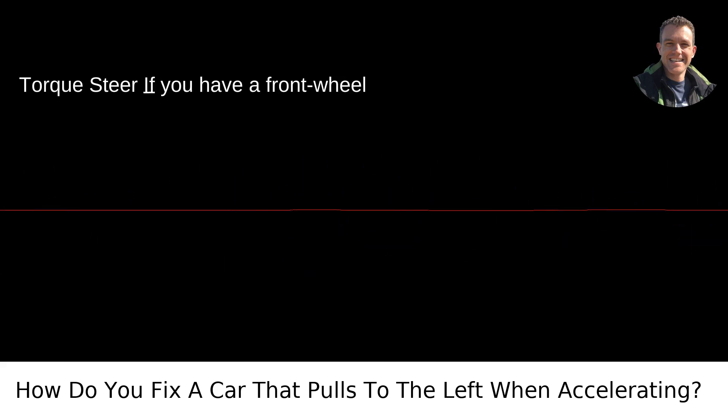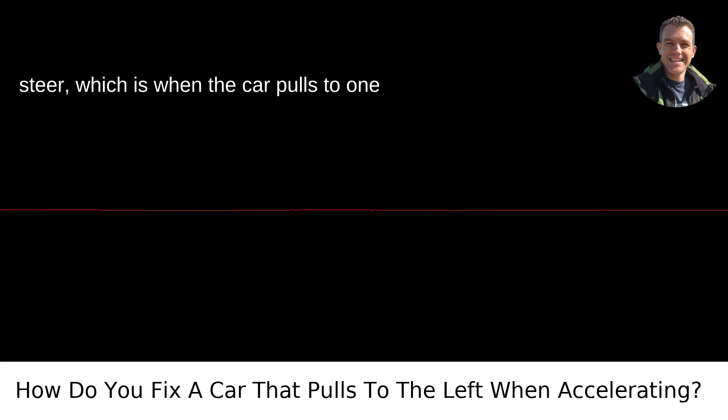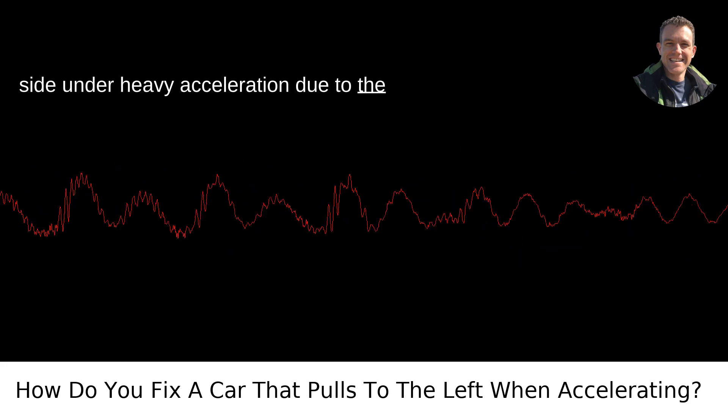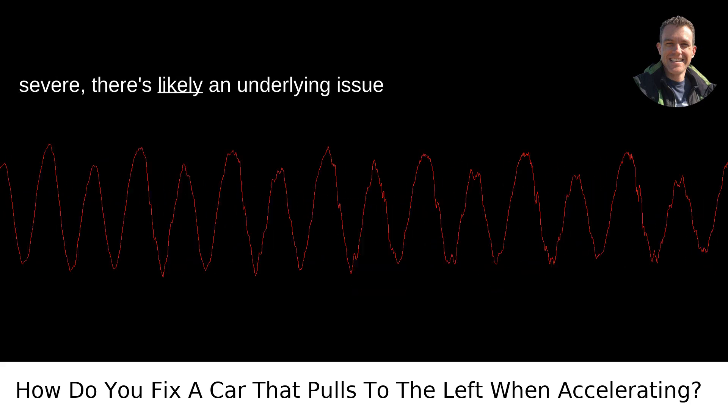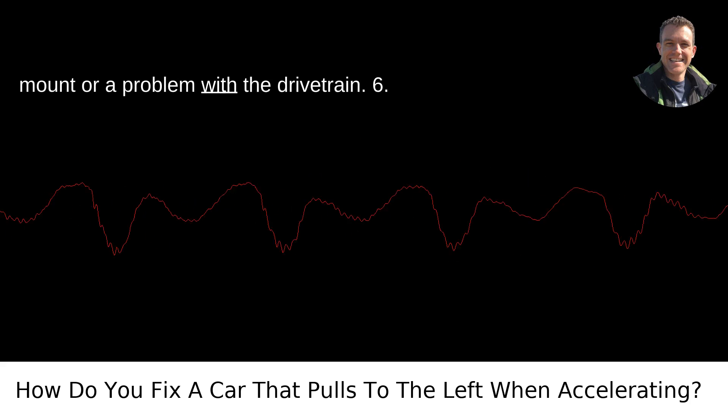5. Torque Steer. If you have a front-wheel drive vehicle, you might experience torque steer, which is when the car pulls to one side under heavy acceleration due to the unequal lengths of the drive axles. While this can be somewhat normal, especially in high-power vehicles, if the pull is severe, there's likely an underlying issue that needs addressing, like a worn motor mount or a problem with the drivetrain.